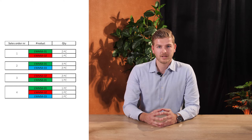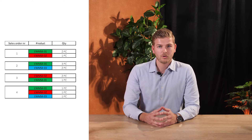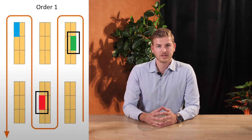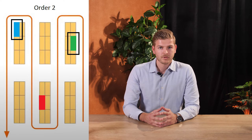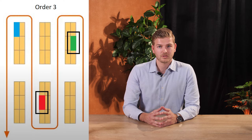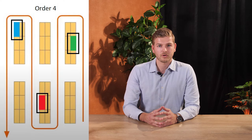Before demonstrating this functionality in SAP EWM, I will first describe the business scenario. In our scenario, four different orders have to be picked, all containing similar products. The similar products are visualized in green, red and blue. When these orders are picked individually, the operator has to make four individual pick-rounds, all containing the same bins.